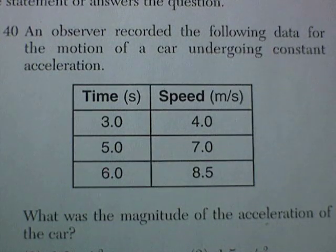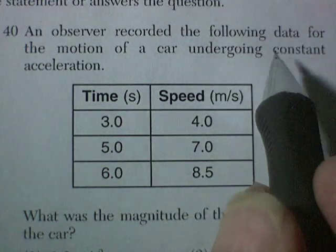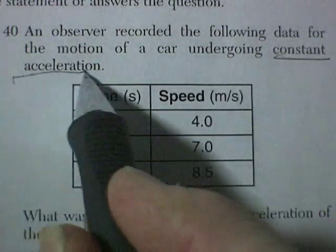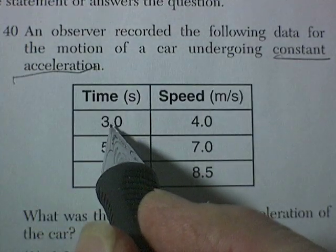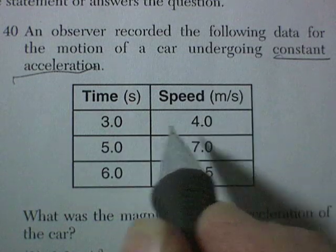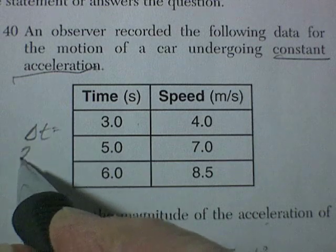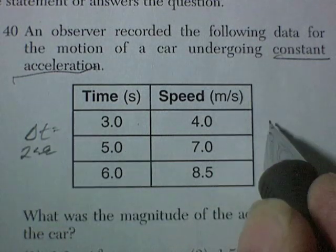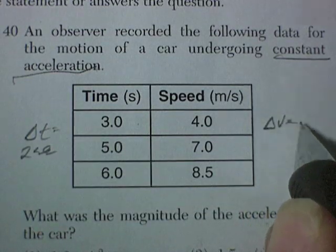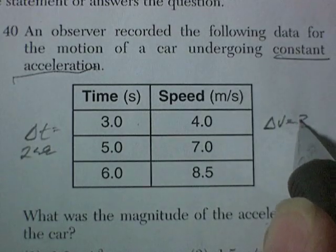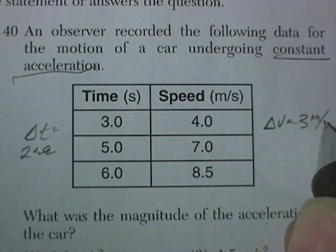Question 40. An observer recorded the following data for the motion of a car undergoing constant acceleration. Well, at the beginning, it was traveling at 4. 2 seconds later, so change in time is 2 seconds. It's changed its velocity from 4 to 7 or 3 meters per second.